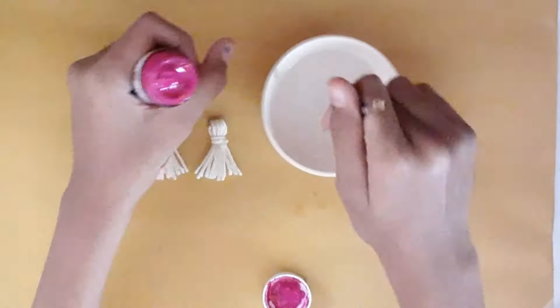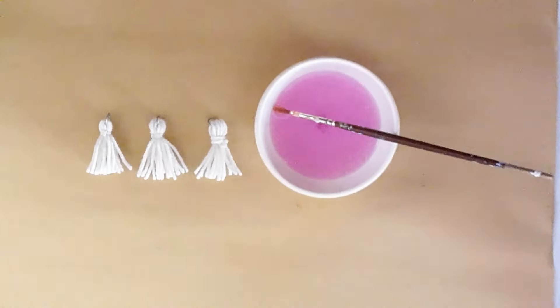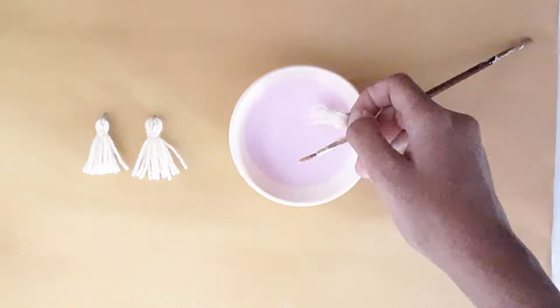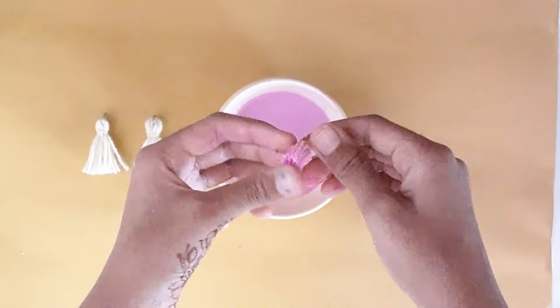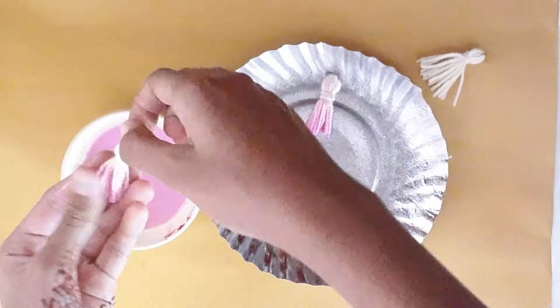Now I am using my pink acrylic paint and mixing it into water. And then I am going to dip in my tassels and spread it out evenly using my fingers. Like so. And do the same with the rest of the tassels.